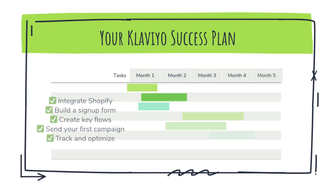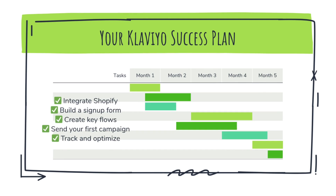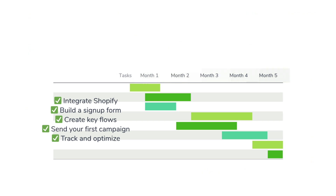Here's your quick action plan to succeed with Klaviyo: integrate with Shopify, build a signup form, set up your key flows, launch your first campaign, and keep tracking and optimizing. If you follow these five steps, you'll be well on your way to creating a smarter, more profitable email and SMS marketing engine.